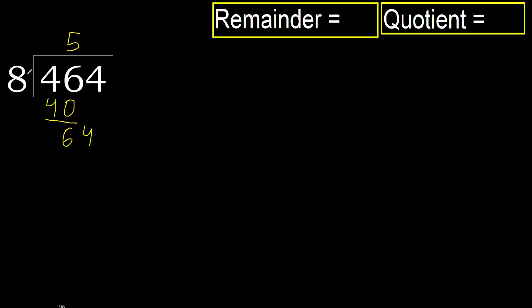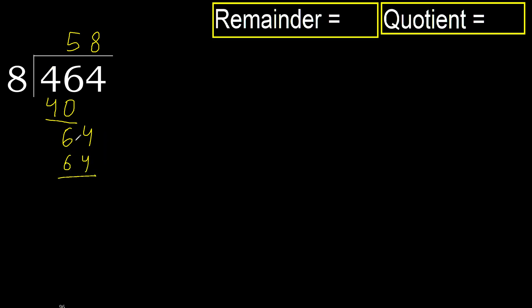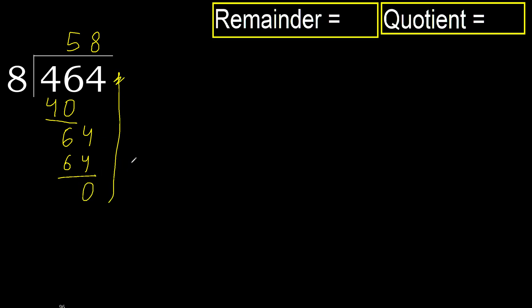64 divided by 8. Multiply by 8: 64 is not greater. Subtract: 0. Next, there is no more number, therefore finish.